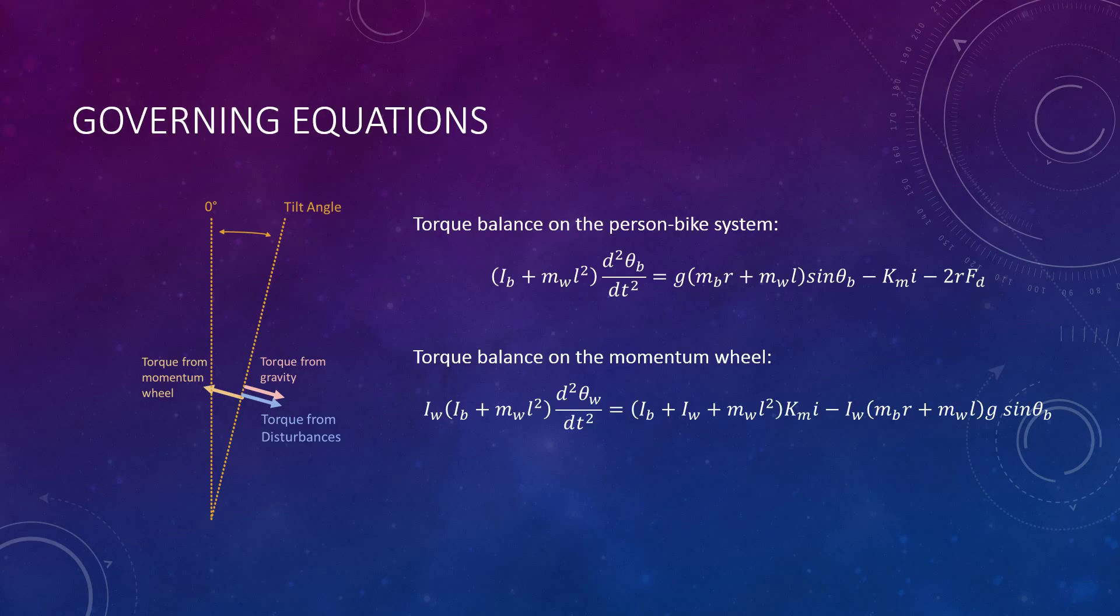So here are our governing equations. The top one is a torque balance on the person-bike system, and the bottom one is the torque balance on the momentum wheel. So you can see from these equations we are looking at a system of second order, non-linear differential equations. So we had to linearize these a bit and do some other tricks to get them in more of a standard form.